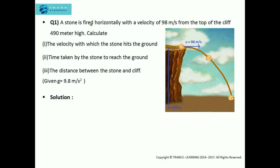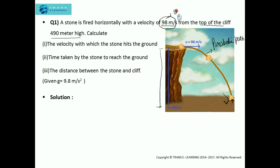The first question: a stone is fired horizontally with a velocity of 98 meters per second from the top of a cliff 490 meters high. You can see in the figure that the height of the cliff is 490 meters and the stone is fired horizontally, taking a parabolic path, and it touches the ground at this point. We need to find: the velocity with which the stone hits the ground, the time taken by the stone to reach the ground, and the distance between the stone and the cliff — what we call the horizontal range.